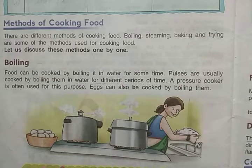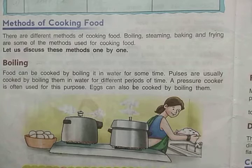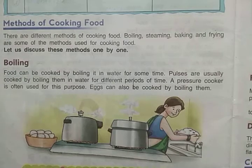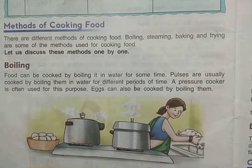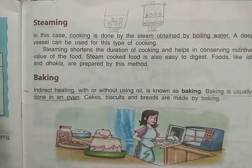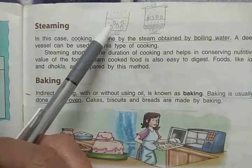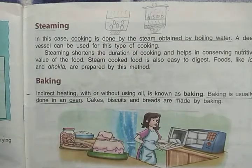Hello students, we are revising the methods of cooking. In the previous video we revised boiling, steaming, baking, and frying. In boiling and steaming we need water, whereas in other methods we don't. The difference between these two is that in boiling we dip the food item in water, whereas in steaming we use only the steam obtained by boiling water.